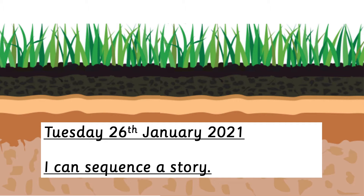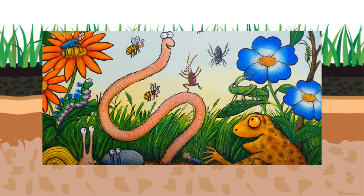Hi everyone and welcome back to our English. Today we're going to talk a little bit more about Superworm and we're going to think about sequencing the story. Hopefully you've been on the YouTube channel and you've watched the story of Superworm. Have another watch of that video, make sure you know the story really well, because we need to know the exact order of all the things that happen in the story for today's session. Go back to our YouTube playlist, find that Superworm video, watch it, and then get on with today's jobs.